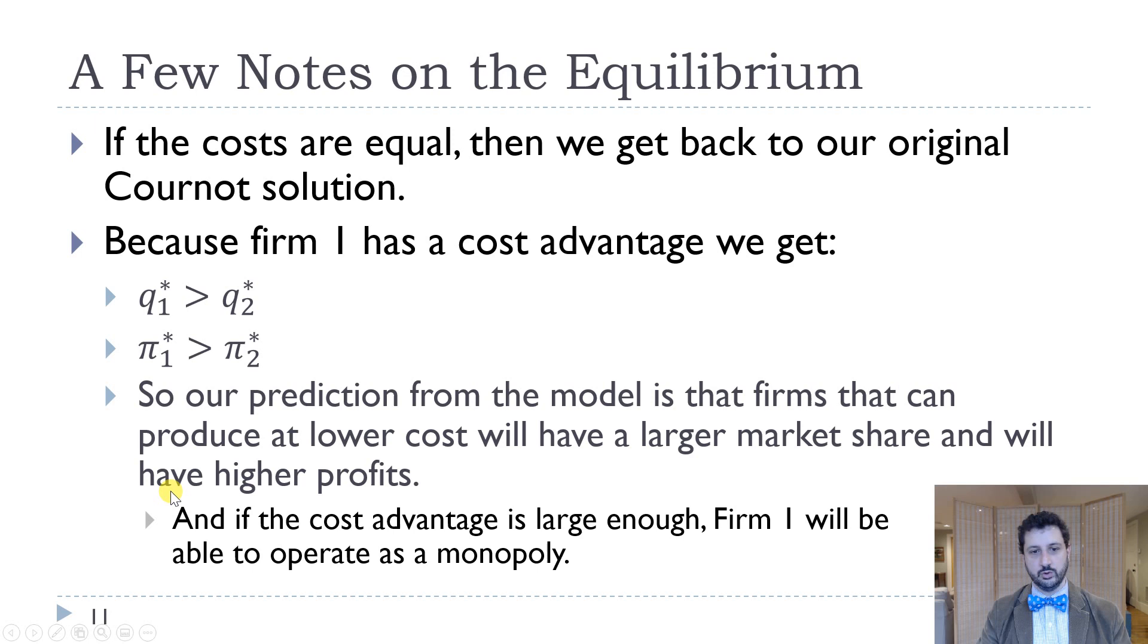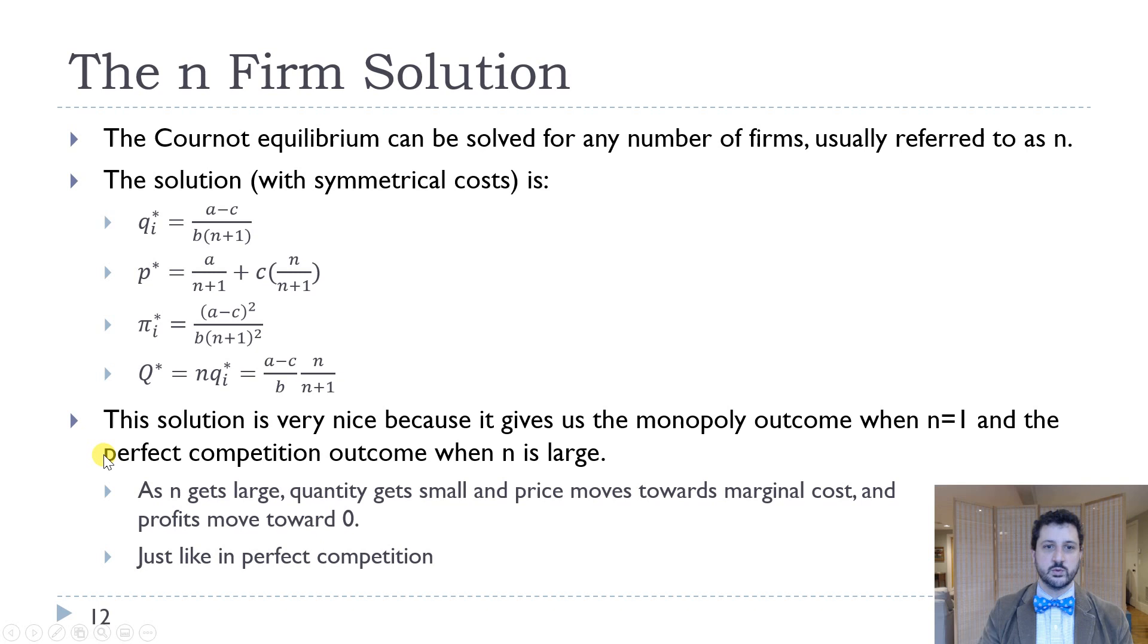Now, if we have instead of two firms, we have N firms and we're going back now to symmetrical costs. So costs are all the same. We can solve this. It's actually not that hard to solve, but I'm certainly not going to require you to solve it in this class. We get, for quantity, each firm produces A minus C over B times N plus 1. Note that when N equals 1, we get the monopoly solution. When N equals 2, we get the duopoly solution. So that's nice.